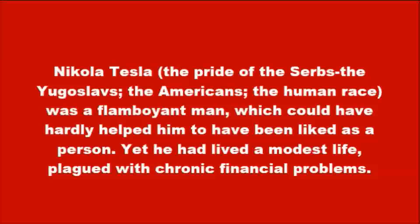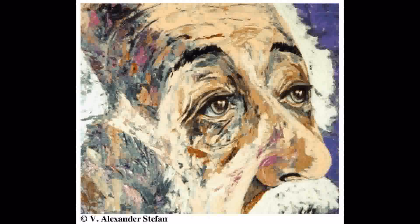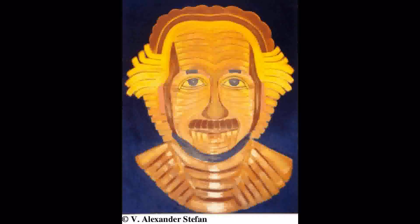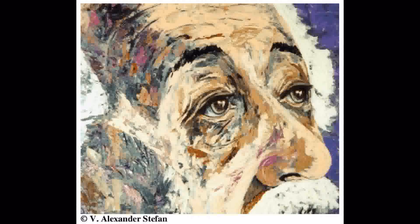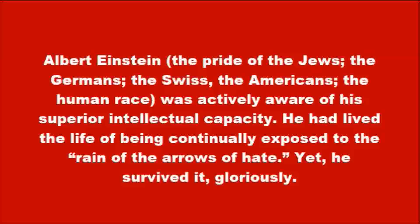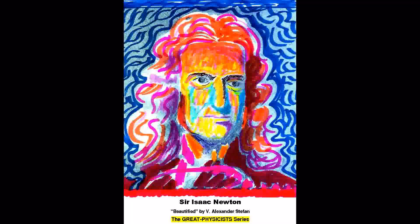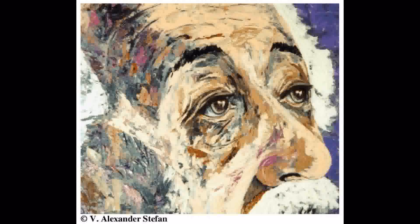Yet he had lived a modest life, plagued with chronic financial problems. Albert Einstein — the pride of the Jews, the Germans, the Swiss, the Americans, the human race — was actively aware of his superior intellectual capacity. He had lived the life of being continually exposed to the reign of the arrows of hate. Yet he survived it gloriously. Both Tesla and Einstein had subscribed to the wisdom of Newton, having praised the work of their predecessors. The three arrogant geniuses did show, however, the trace of humbleness, giving to arrogance a somewhat good name, so to speak.